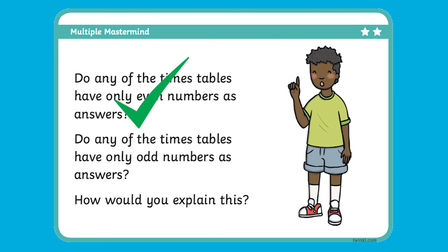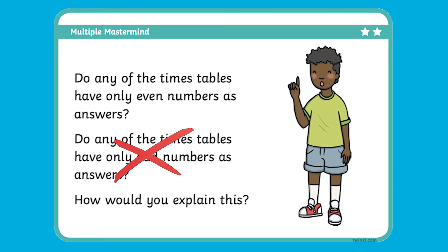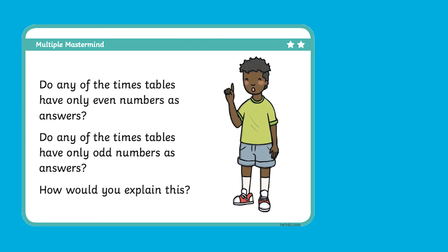We know that there are some times tables that have only even numbers and we also know that there is no times table that has only odd numbers. However, it is important for your child to have the chance to investigate this, maybe using equipment like counters or number squares to independently come to this conclusion. This is a great example of an activity that encourages deeper learning.